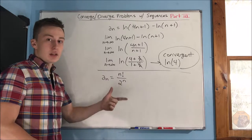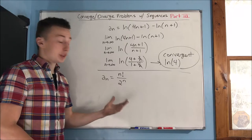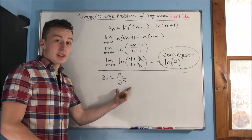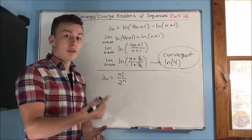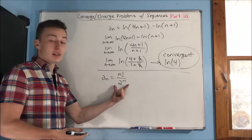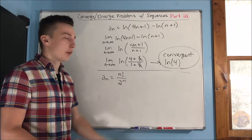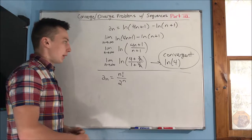Because if it is increasing faster, then this sequence is going to diverge. But if 2 to the n is increasing faster, well, you're just going to be getting a smaller and smaller fraction. So, it's actually just going to be 0, and it's going to converge to 0. So, we've got to figure out what happens here.